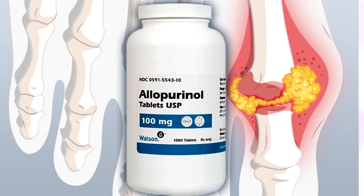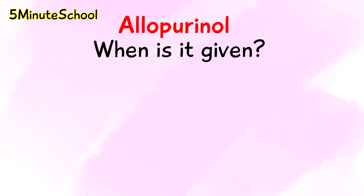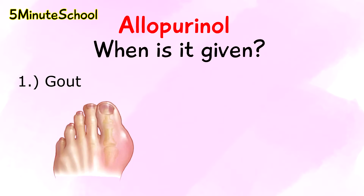This video will be discussing how allopurinol actually works. The key indications for when allopurinol is given to a patient is when they have symptoms of primary or secondary gout, like acute pain, uric acid crystals, and joint destruction.